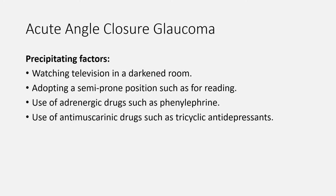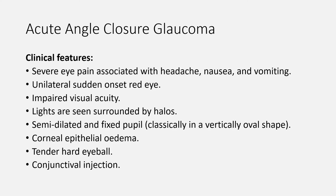The precipitating factors of acute angle closure glaucoma include watching television in a darkened room, adopting a semi-prone position such as for reading, use of adrenergic drugs such as phenylephrine, and use of antimuscarinic drugs such as tricyclic antidepressants. The clinical features include severe eye pain associated with headache, nausea and vomiting, unilateral sudden-onset red eye, impaired visual acuity, lights seen surrounded by halos, semi-dilated and fixed pupil classically in a vertically oval shape, corneal epithelial edema, tender hard eyeball, and conjunctival injection.